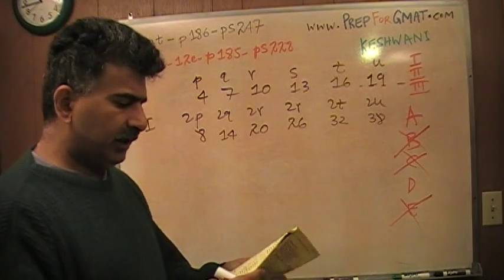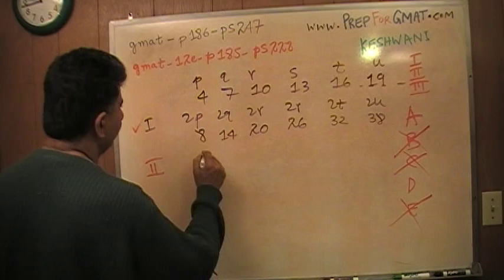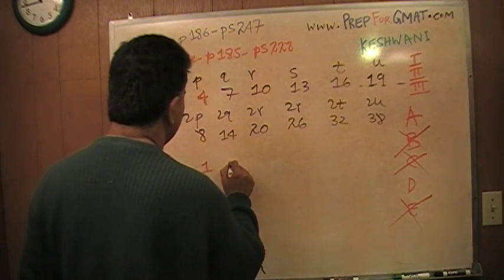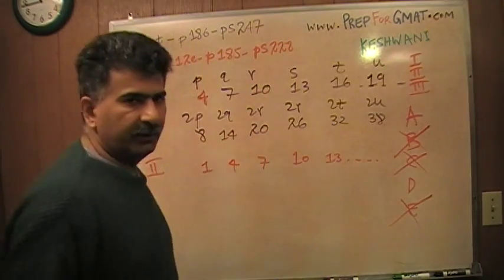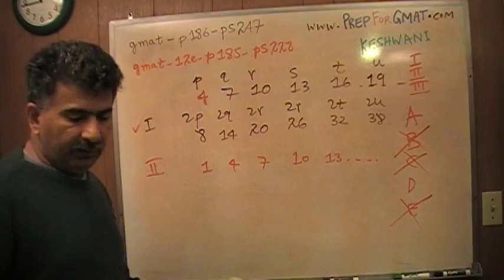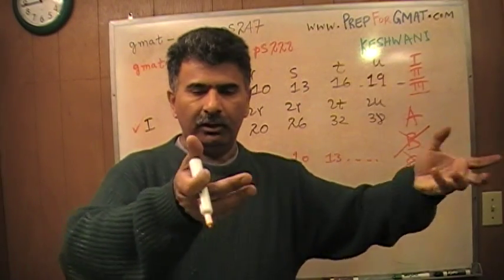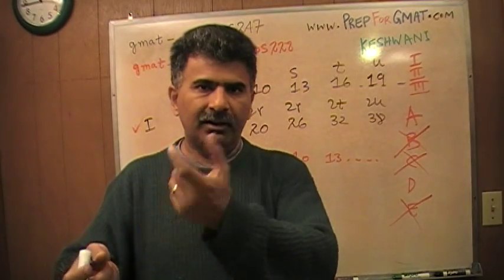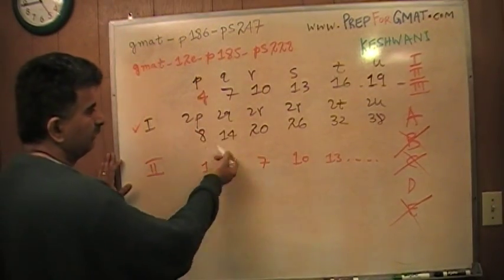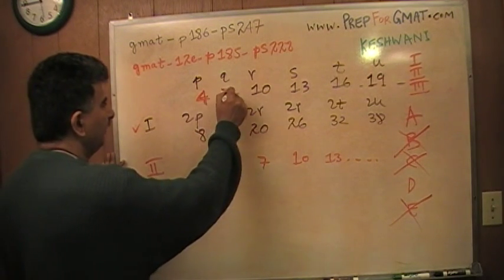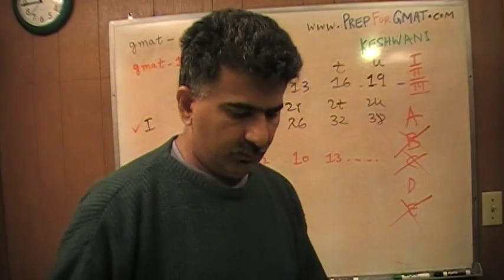The second statement says P-3, Q-3, R-3, S-3, and so on — basically taking the original series and subtracting 3 from everything. So 4 becomes 1, 7 becomes 4, 10 becomes 7, 13 becomes 10, and so forth. Is this an arithmetic series? Of course it is. We're just shifting the series 3 units down. The difference between adjoining numbers doesn't change — it's still 3. This is an arithmetic series, which means the correct answer must also have Roman numeral 2 in it.